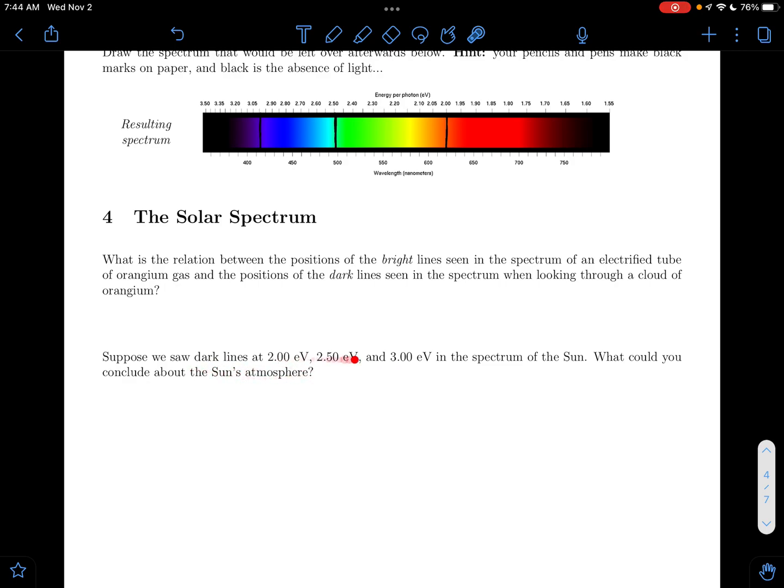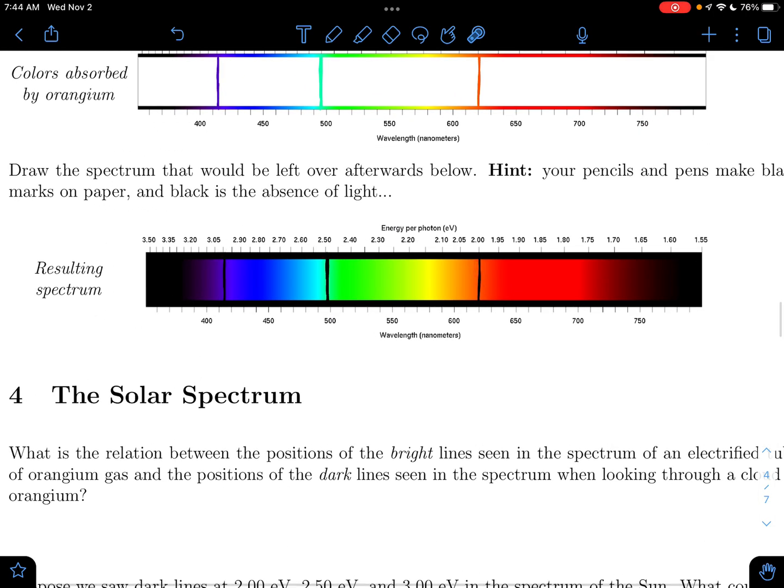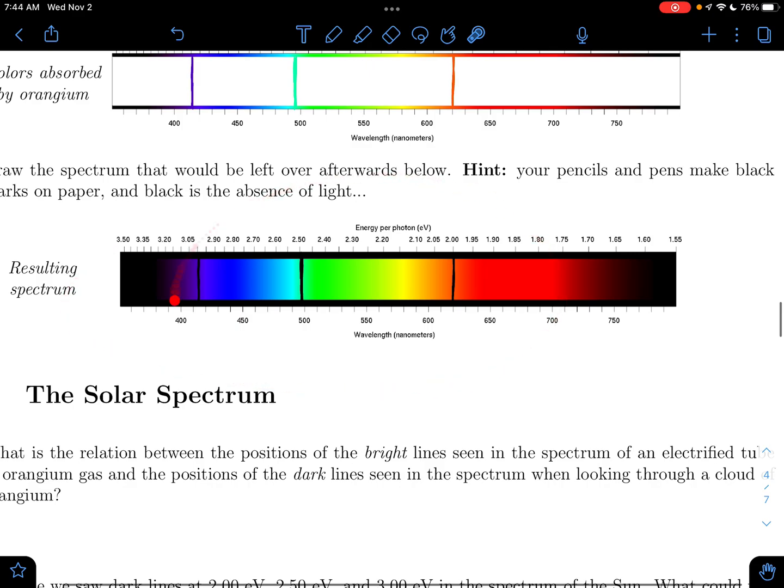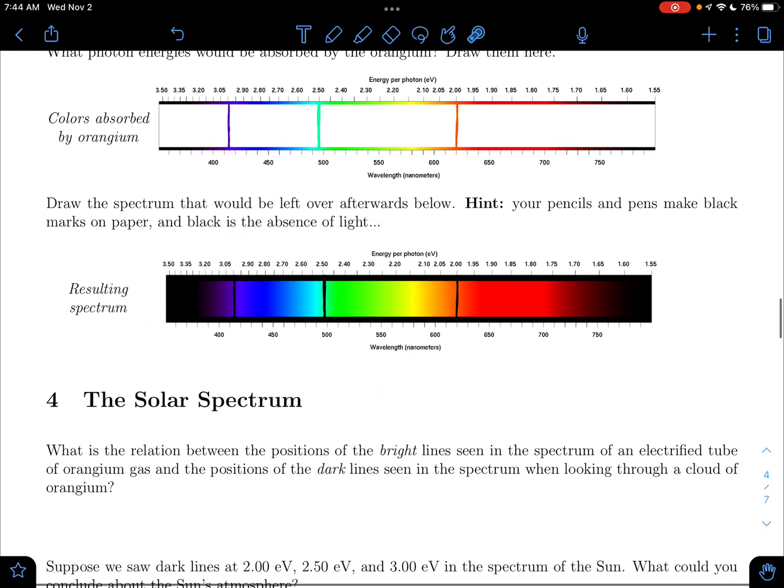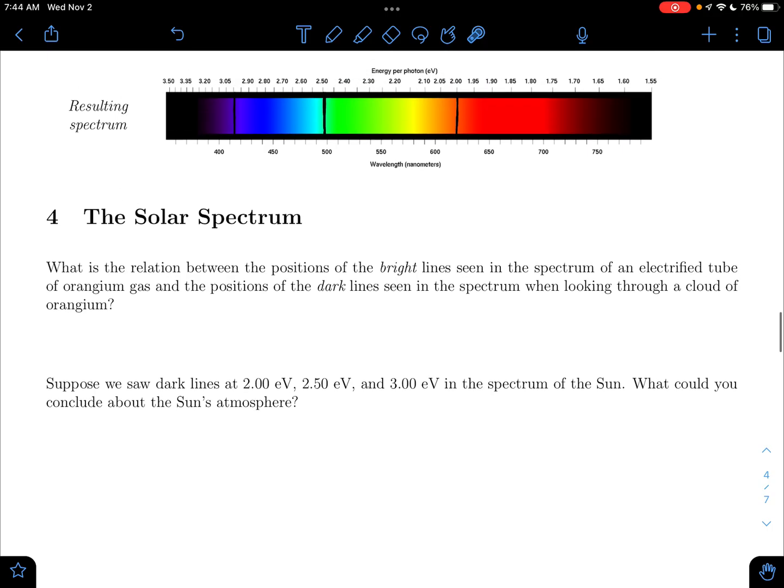And if we saw dark lines at 2, 2.5, and 3 eV in the spectrum of the sun, what could we conclude about the sun's atmosphere? Well, we just said our absorption spectrum from orangium is at 2, 2.5, and 3 eV. So if we saw something like this coming from the sun, we could say orangium is in the sun because we know it absorbs at these specific energies. So it has to be there because we're not seeing those specific energies. So we can say that orangium is in the sun's atmosphere.